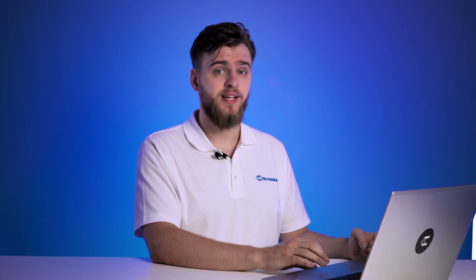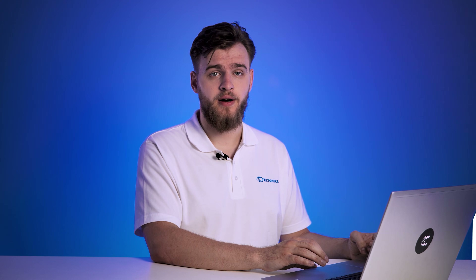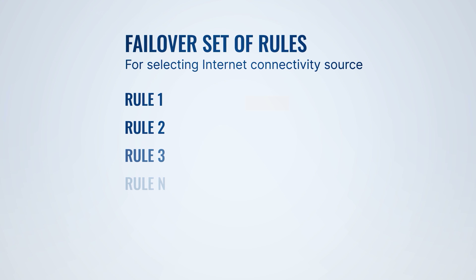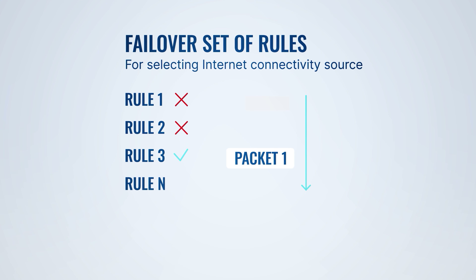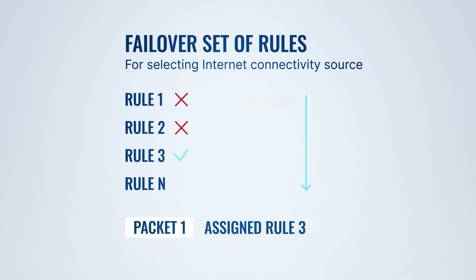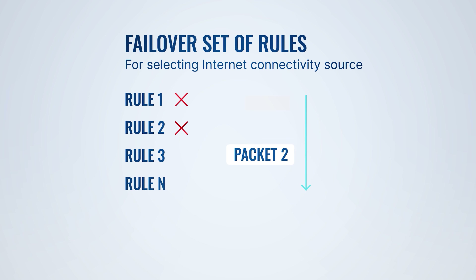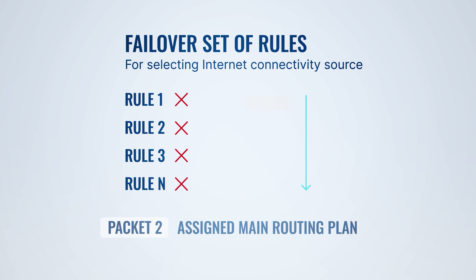Failover rules work in a very similar manner to those of a firewall, as they are set in list form. The router checks if the outgoing packet follows any of the rules set in order, starting from the top. If it finds a matching rule, the router stops looking at the other rules and applies that specific one to the packet. If no rules match, the device just follows the main routing plan.